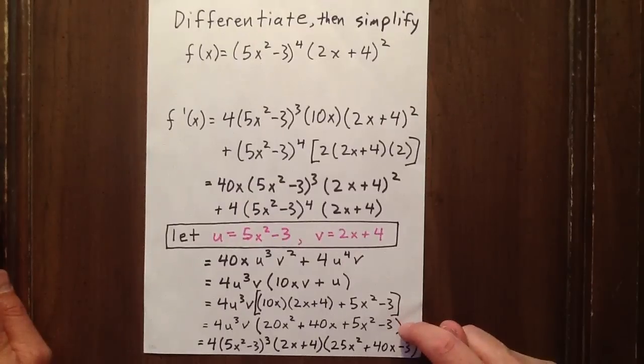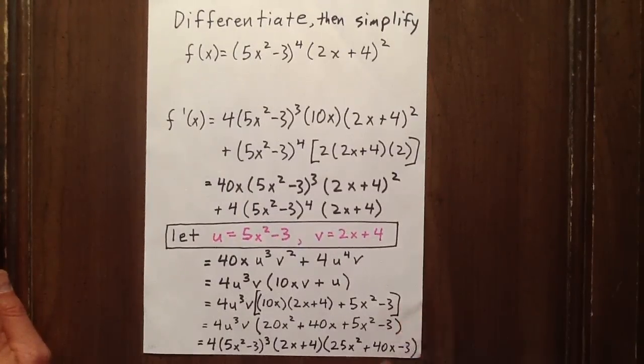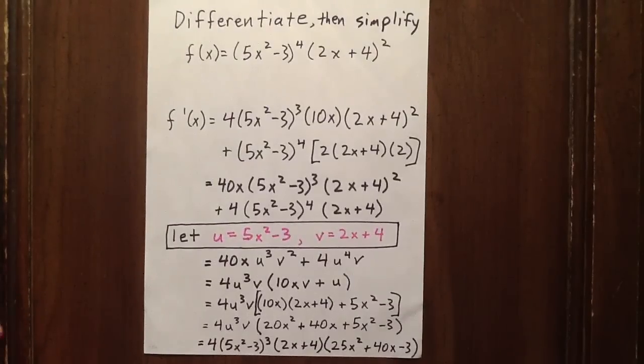When we expand all this out, we have 20x squared plus 40x plus 5x squared minus 3. That simplifies as shown. We still have 3 factors of u and 1 factor of v. And this is our final answer, simplified.